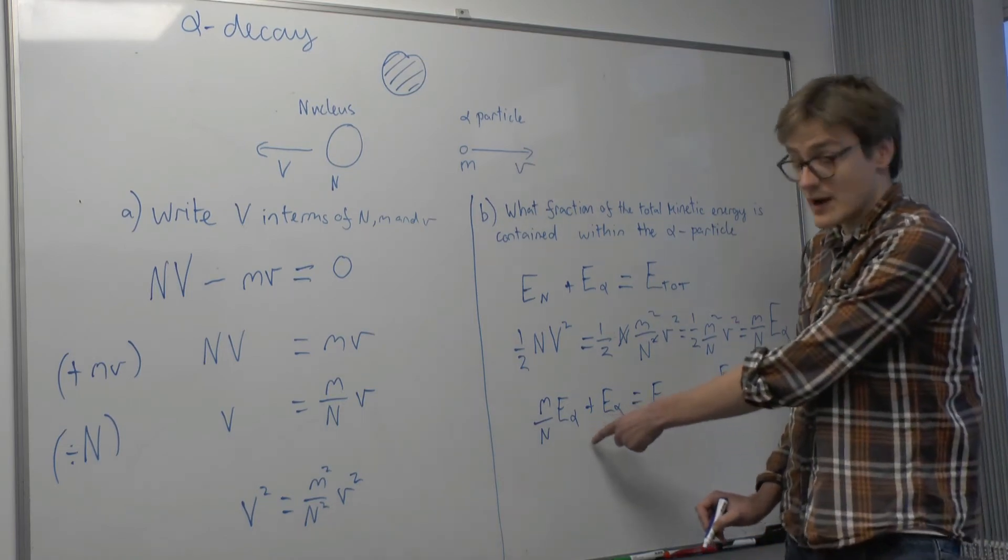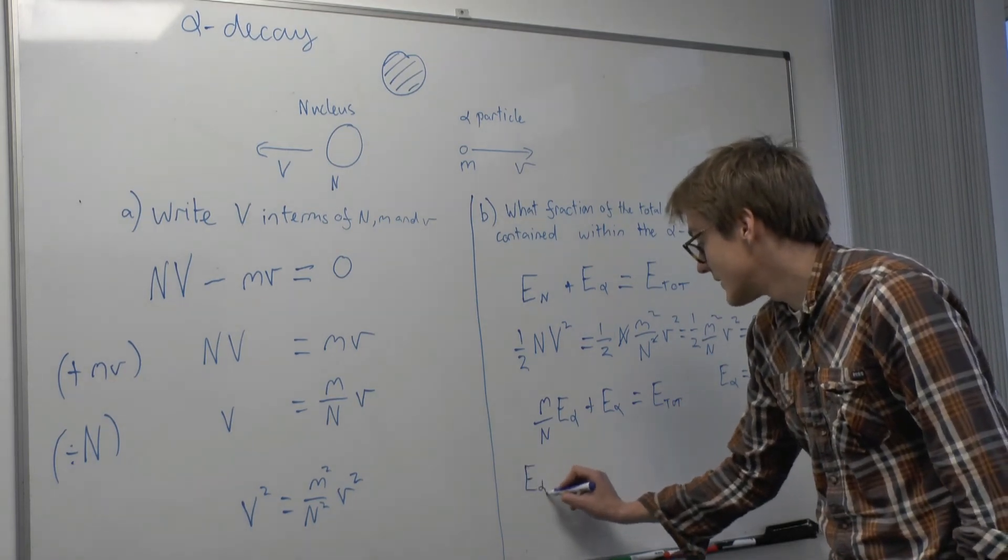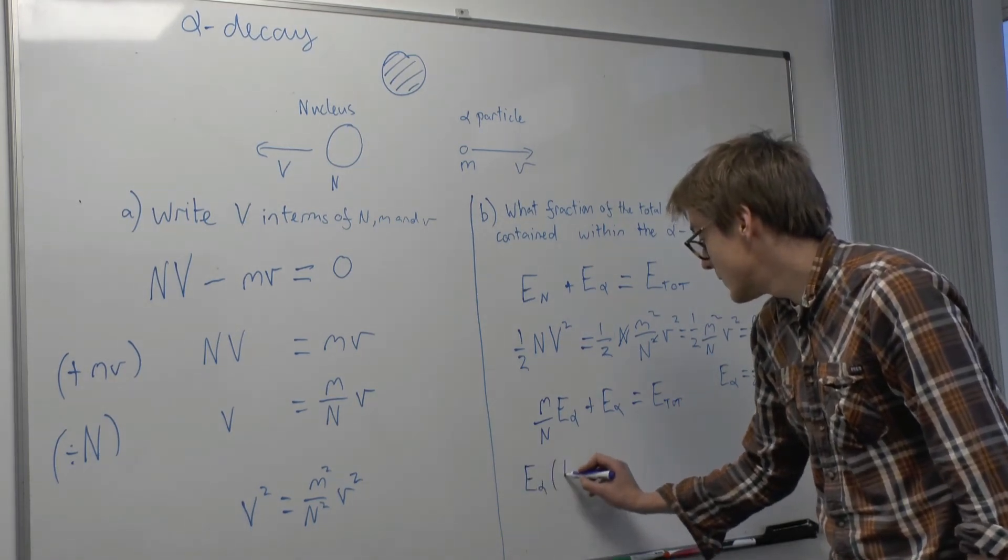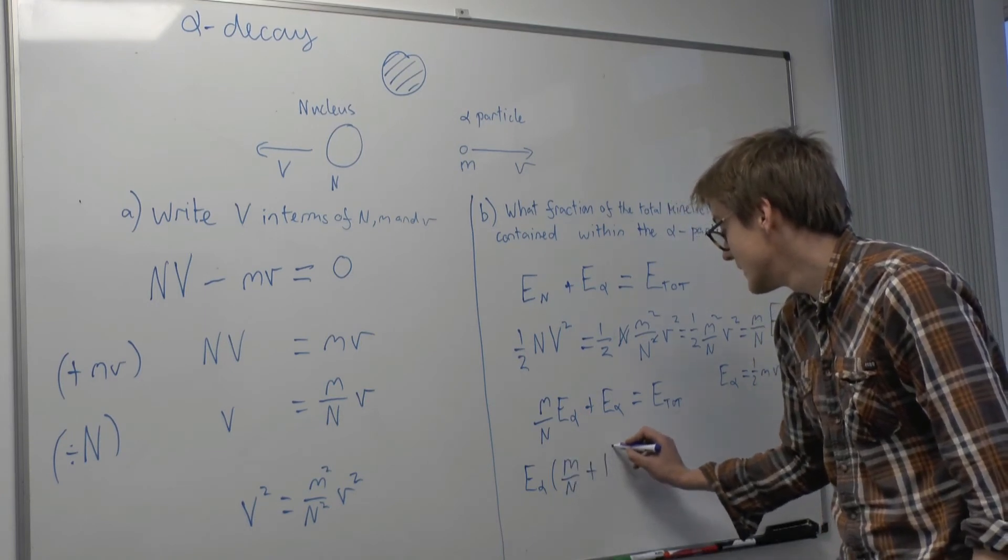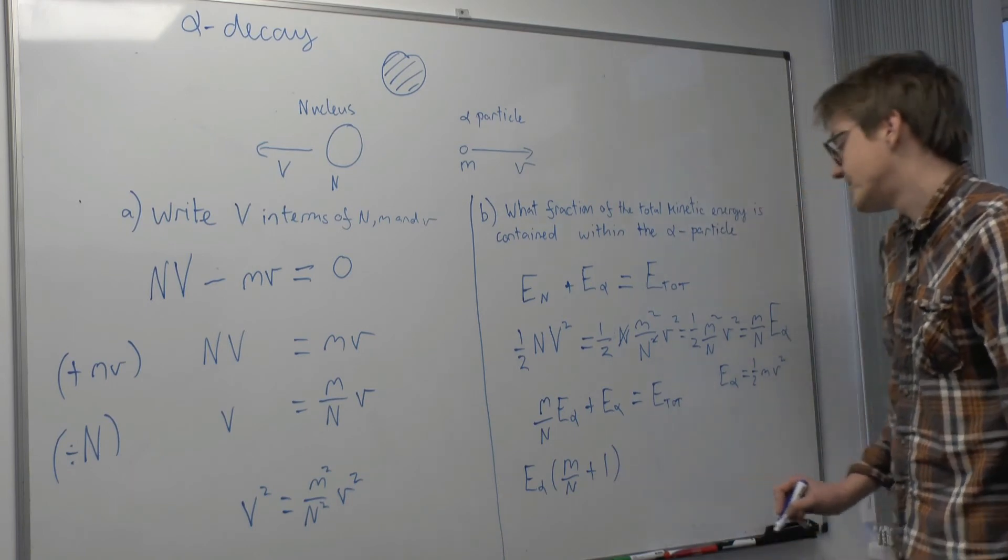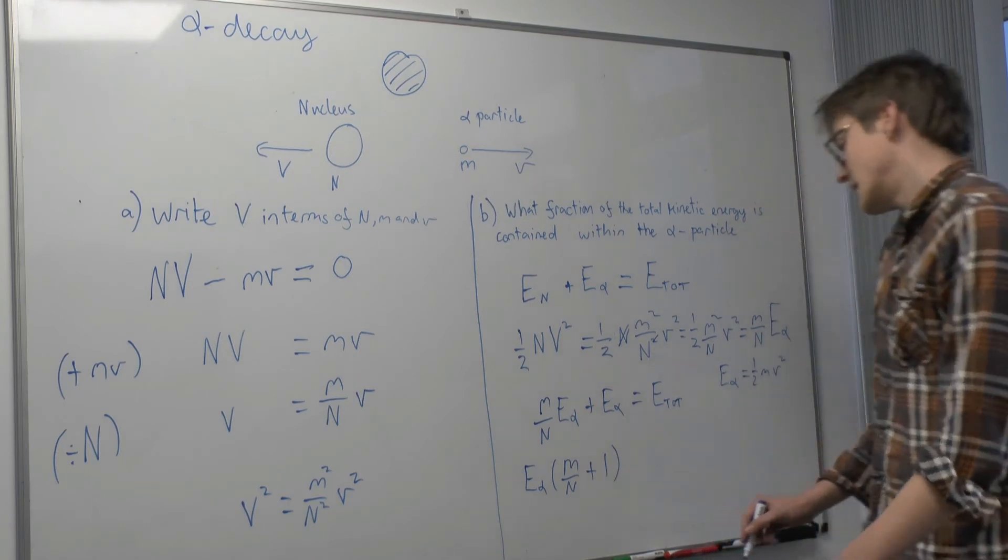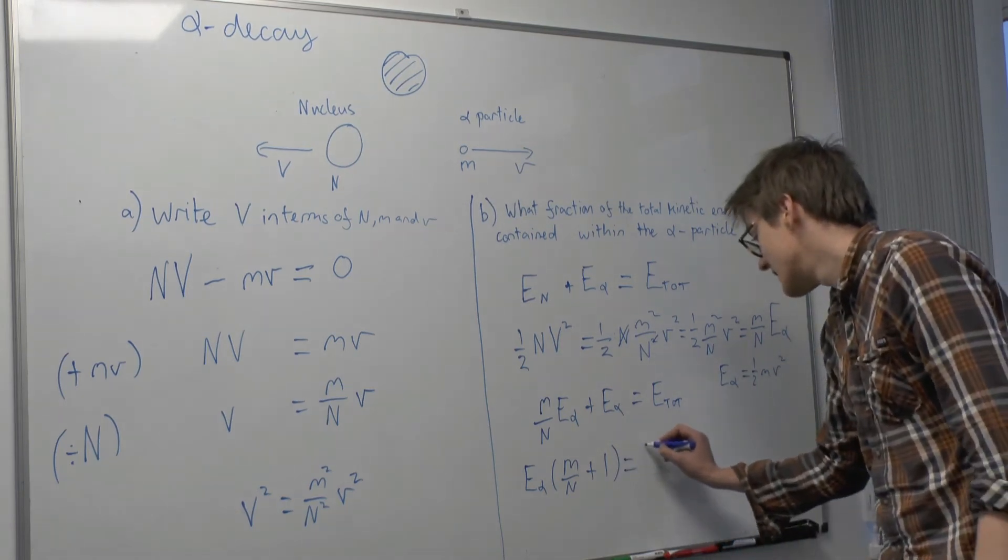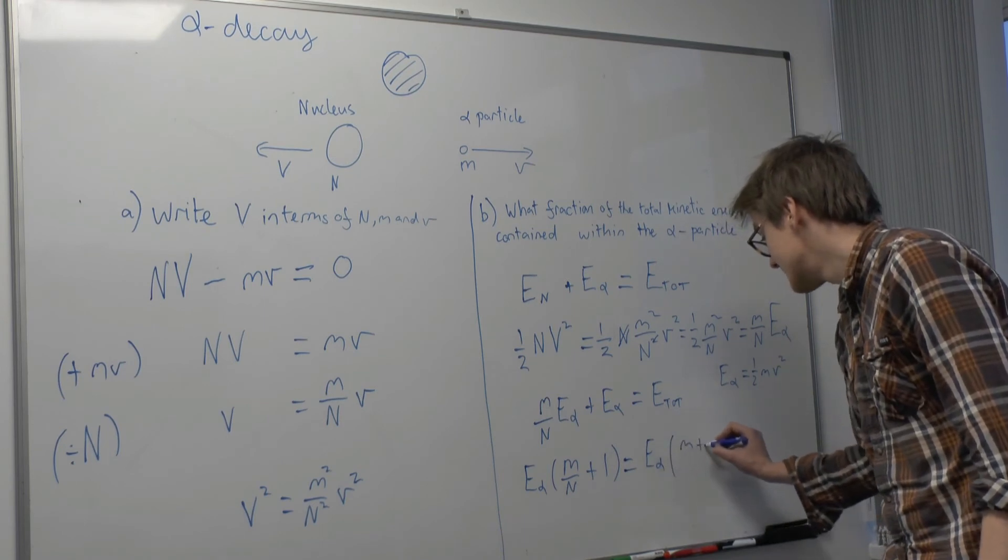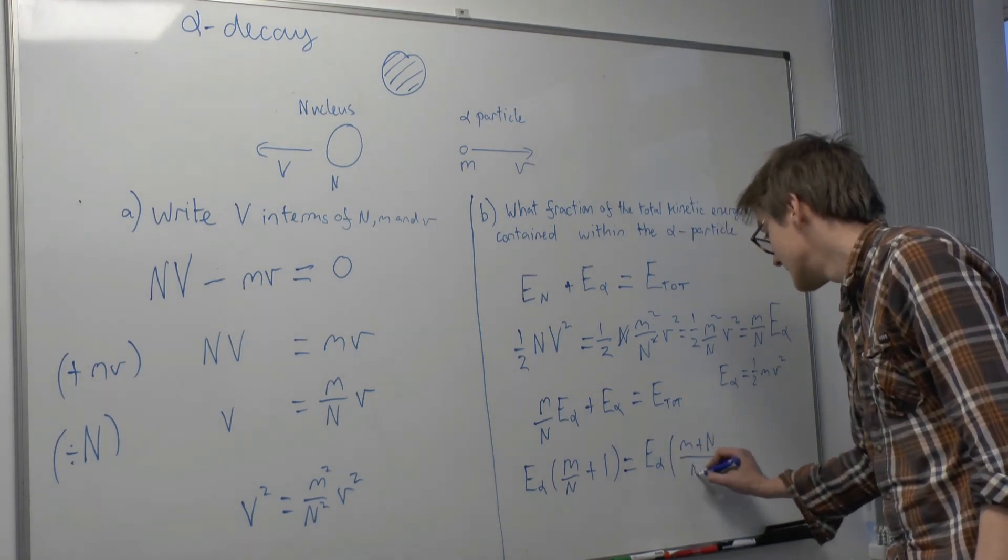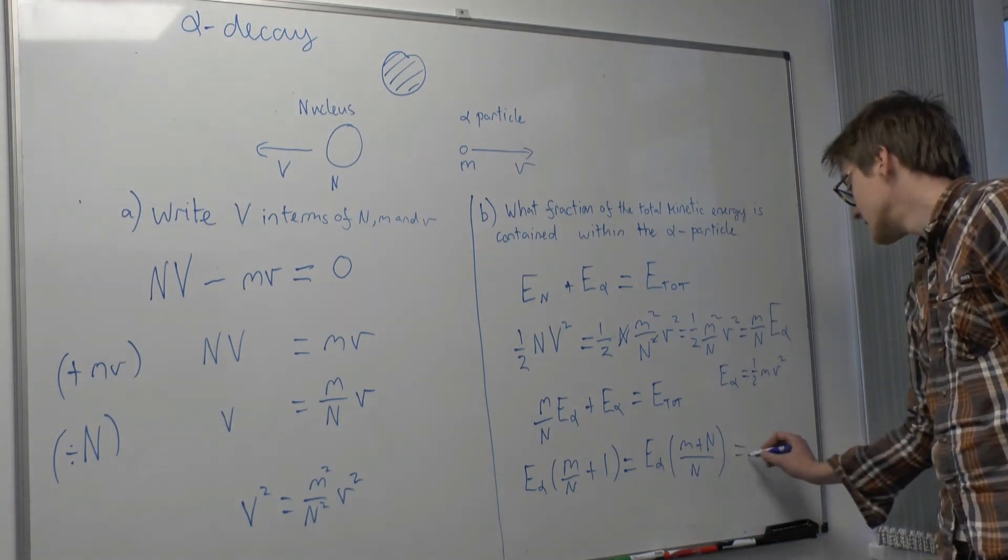Now if we factor out E alpha, we see that this can be written as E alpha N over N plus 1. Now if we put these over a common numerator, we can express this as E alpha times M plus big N over N equals E total.